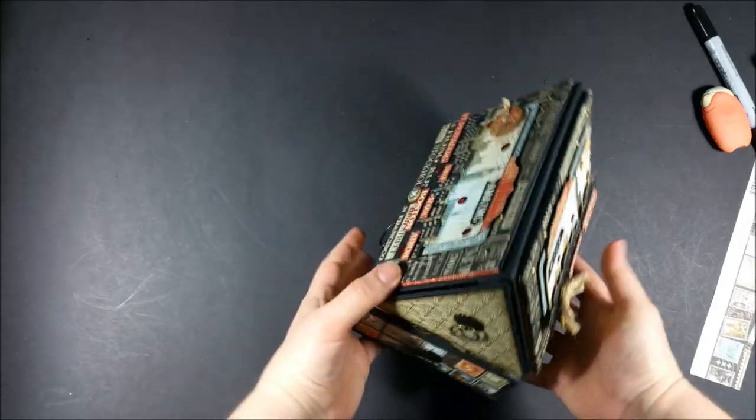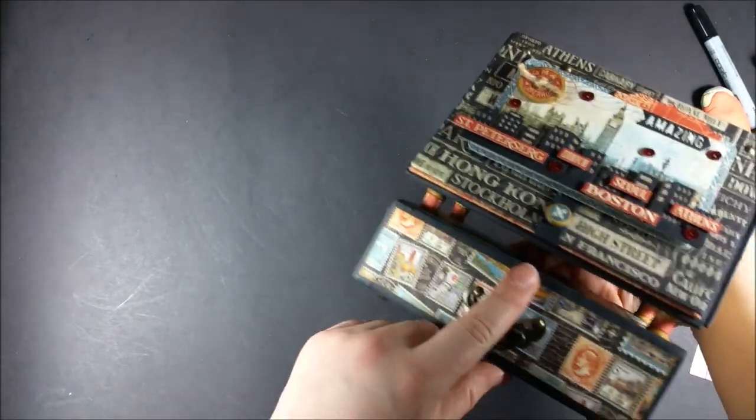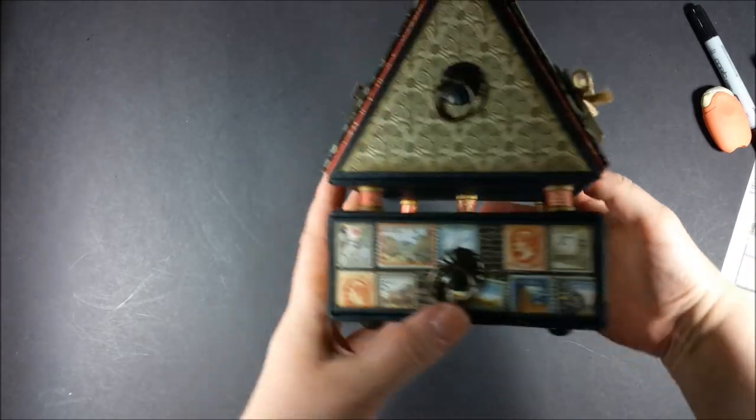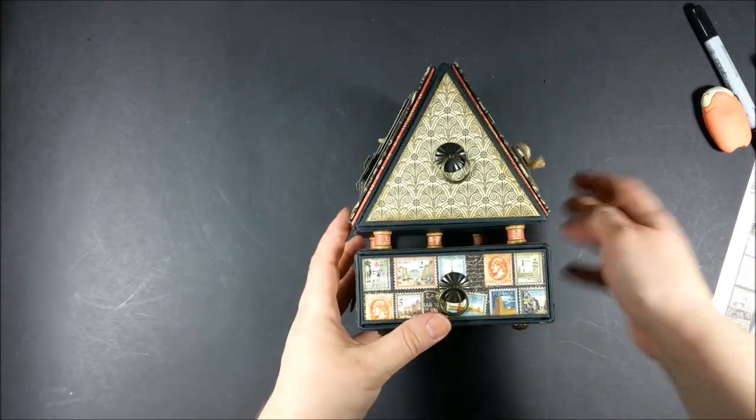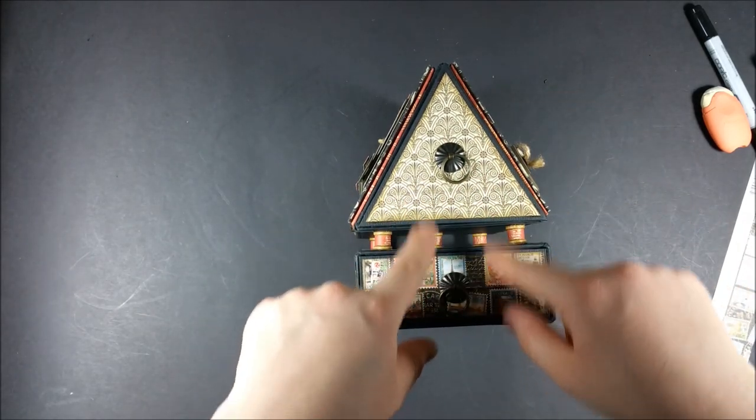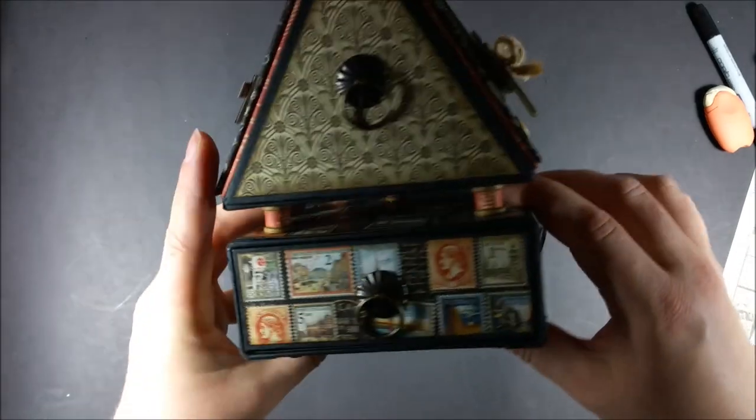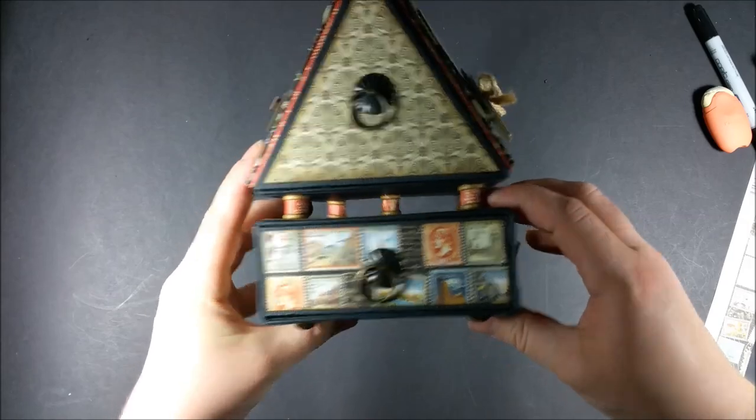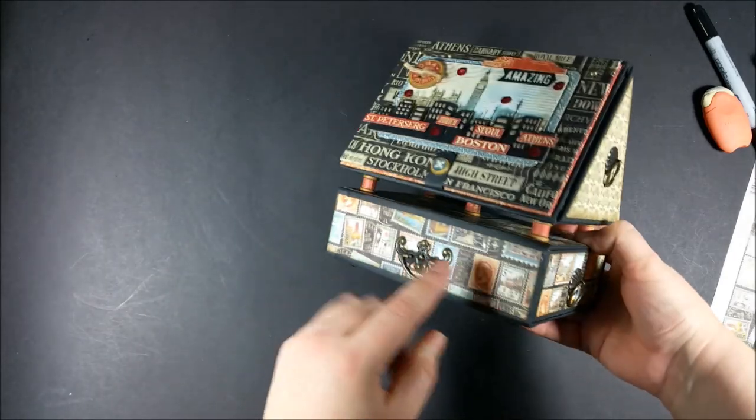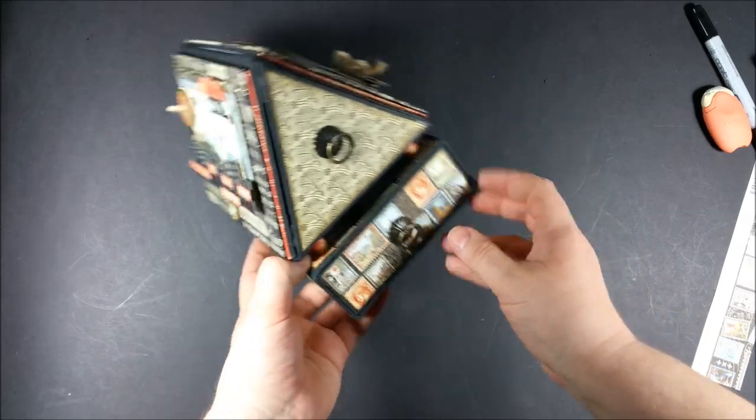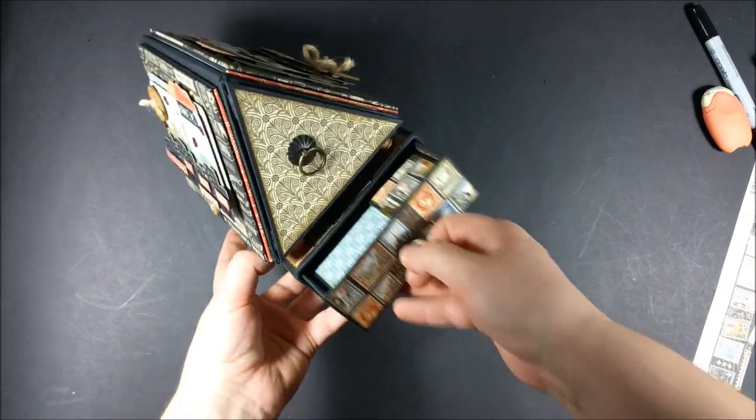I've added the handles here on the sides and on the tiny wooden spools which serve as the feet of the triangular compartment. To connect between those two pieces, I've used a quarter of an inch strip of paper from the paper collection in order to embellish those wooden spools and not keep them plain.